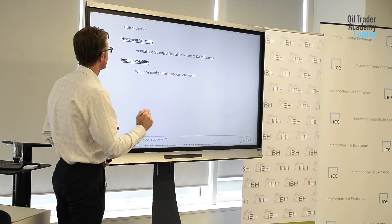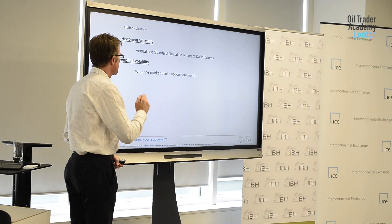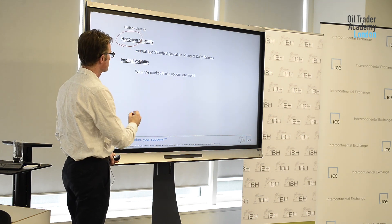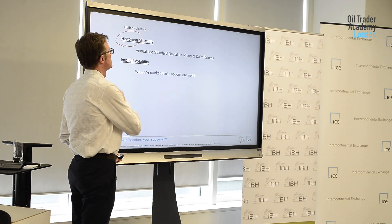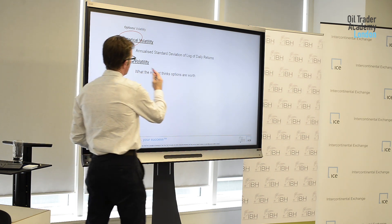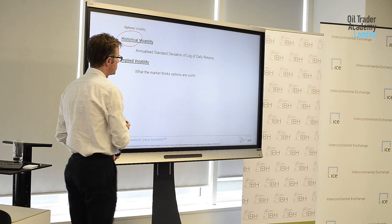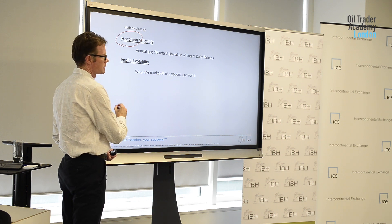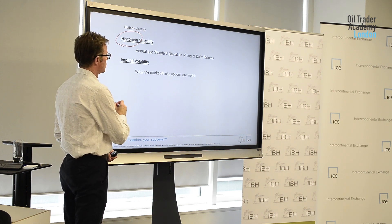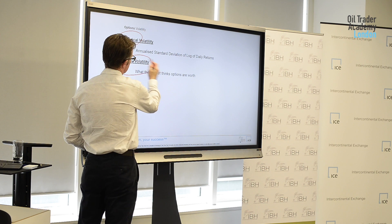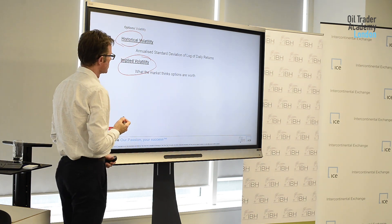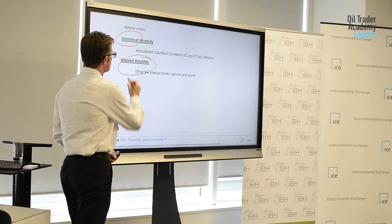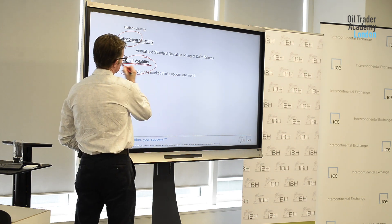When people trade options, they're thinking not really about what's happened in the past — they're thinking about what they're concerned is going to happen in the future. So options traders very rarely use historical volatility as their starting point. They use their expectation of volatility going forward — what do they think options are worth? And that's called implied volatility.